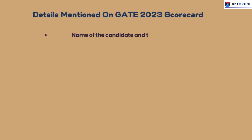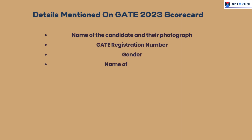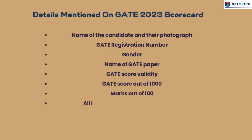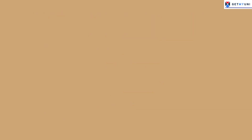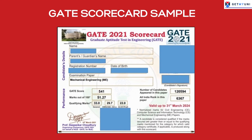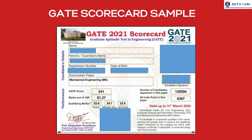Once you download the GATE 2023 scorecard, make sure you check these details mentioned on the scorecard, and if you find any discrepancies, contact the authorities immediately. The details mentioned on the GATE 2023 scorecard are: name of the candidate and their photograph, GATE registration number, gender, name of GATE paper, GATE score validity, GATE score out of 1000, marks out of 100, all India rank in the appeared paper, qualifying mark for different categories, and number of candidates who appeared for the particular paper.